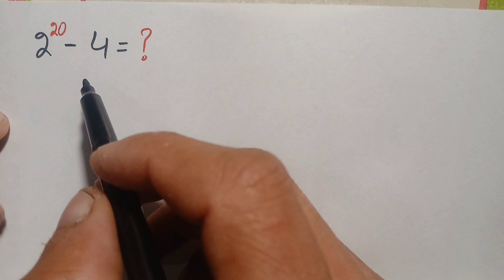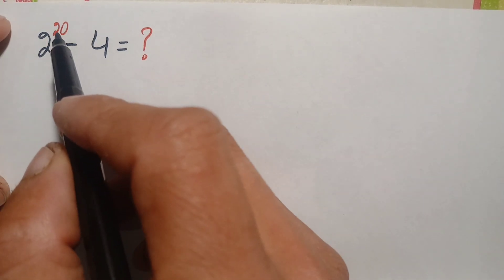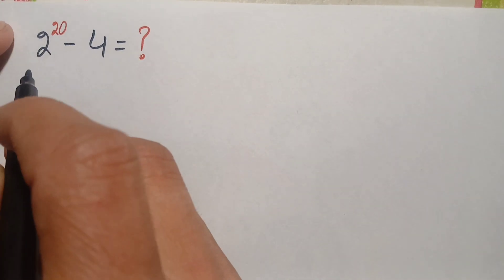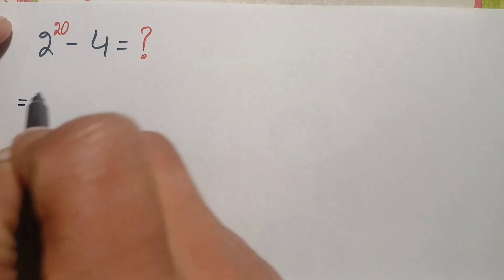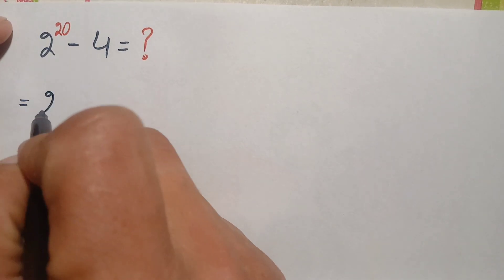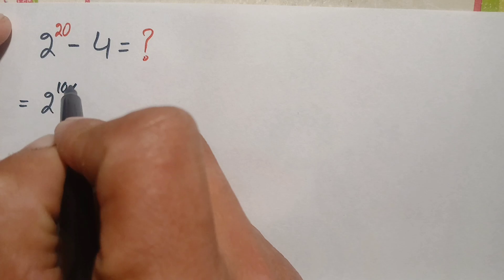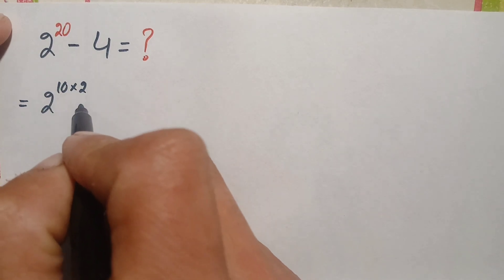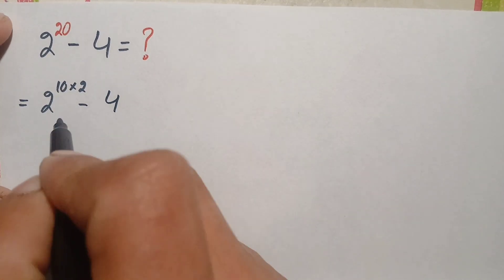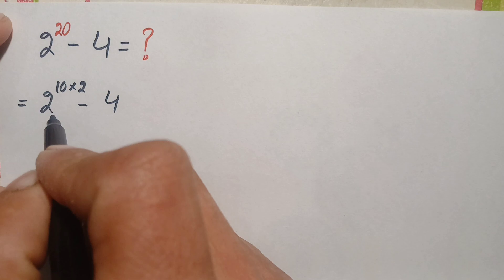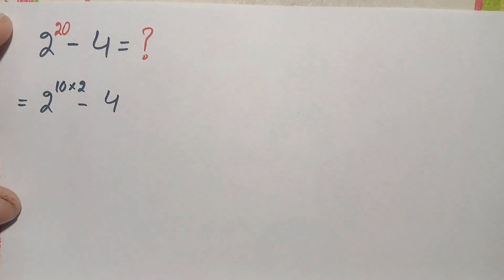So how can we solve this math problem? First of all, we will try to factorize this power 20. So we can write 2 raised to power 20 as 2 raised to power 10 times 2, which is 20, minus 4.